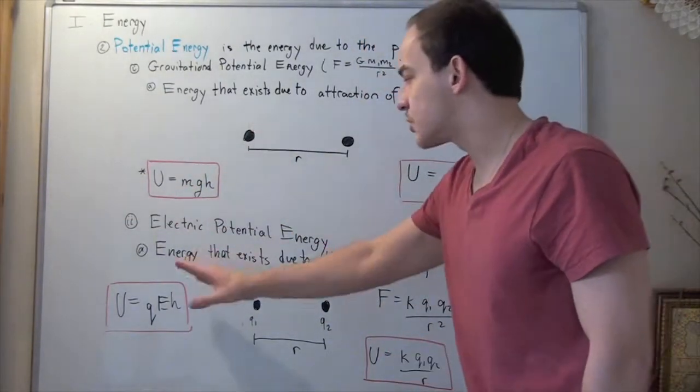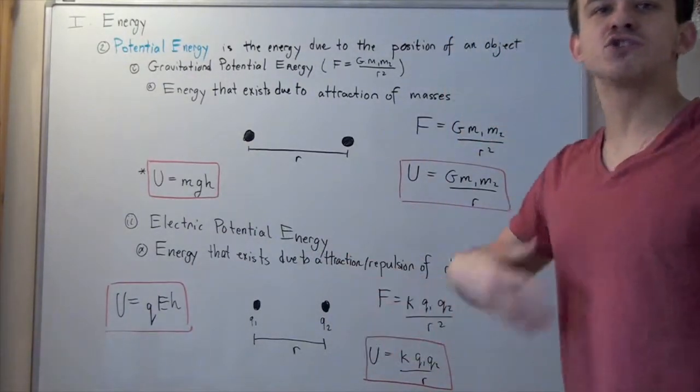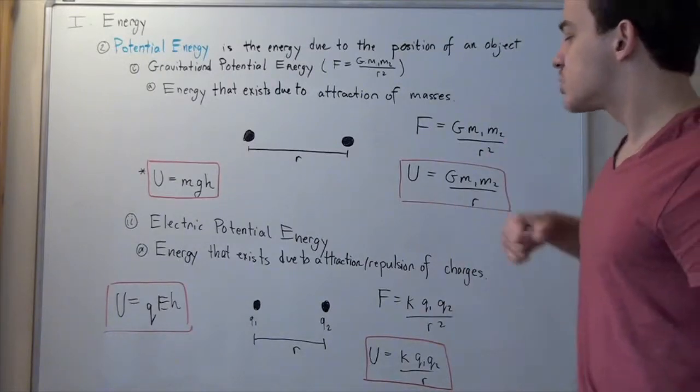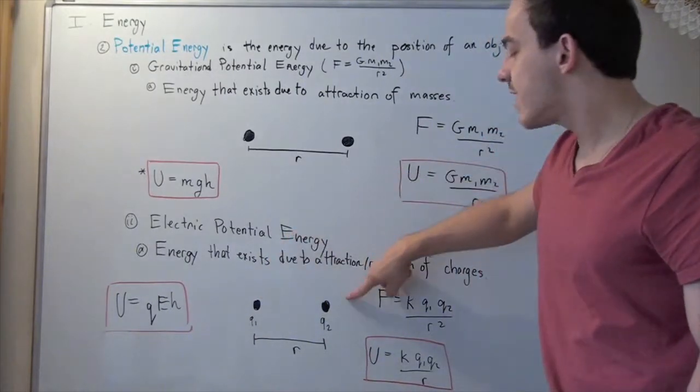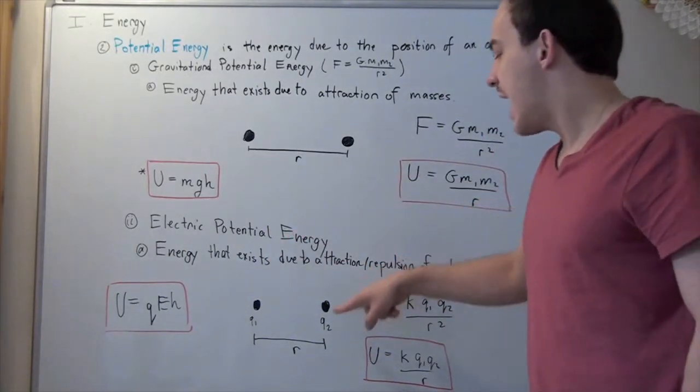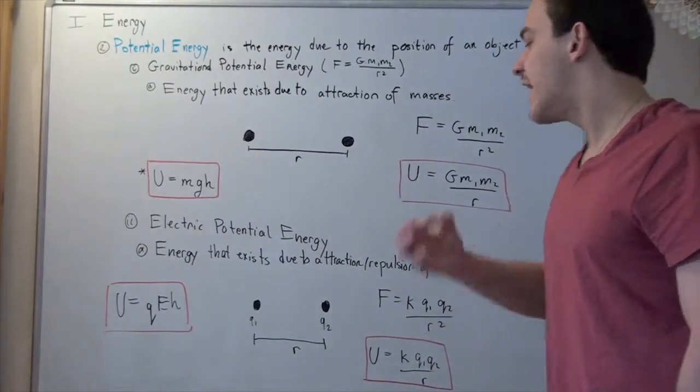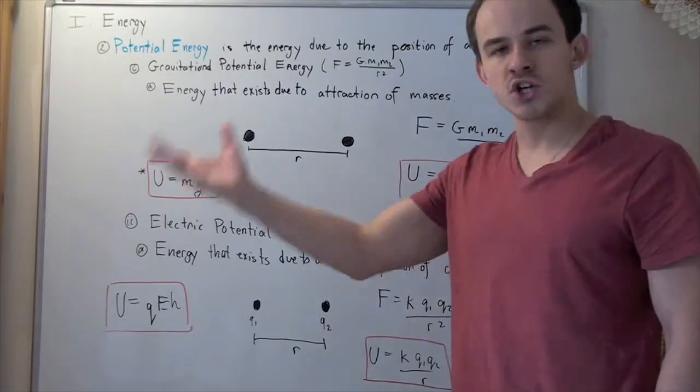Now, this is the energy that exists due to the attraction or repulsion of one or actually two or more charges. So, let's suppose I have one charge with a charge Q1 and a second charge with a charge Q2, and their center of masses is once again a distance R apart. To find the force that each object, each charge creates on the other charge, now I use something called Coulomb's Law, which is given by the following formula.